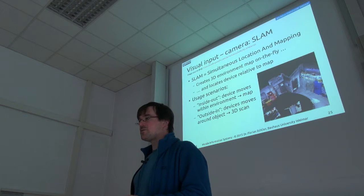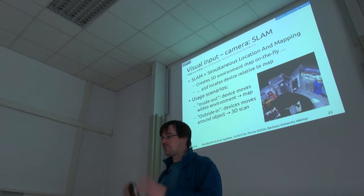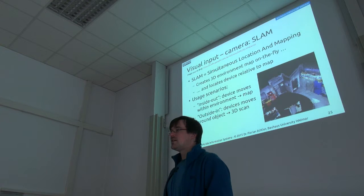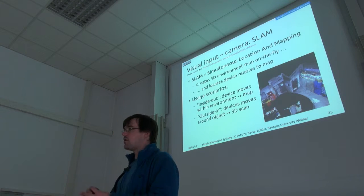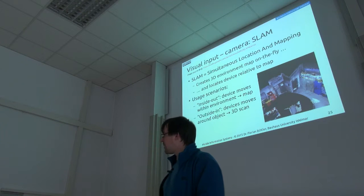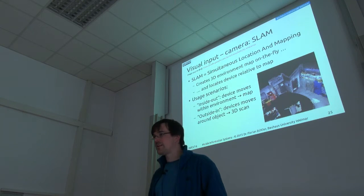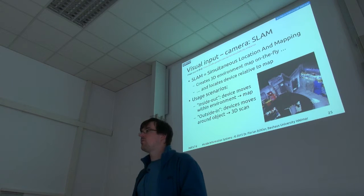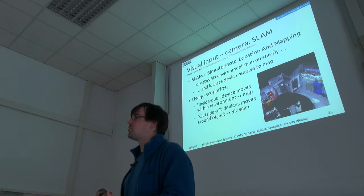The other approach, for which you can actually get commercial apps that work pretty well, is outside-in tracking — a bit the opposite. There you have one fixed object and you move your smartphone around it to create a 3D model. The map is basically of one single object, and the motion of the device around it is just to map that object. Because that has a much smaller scope, this is something you can already do on a mobile device. For a whole room, which has orders of magnitude more 3D points, it's still too computationally expensive.